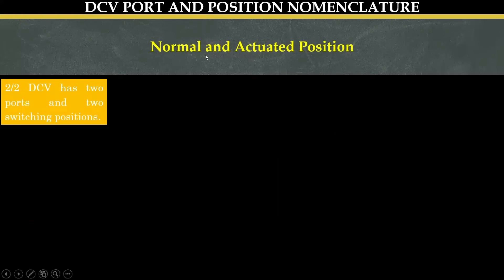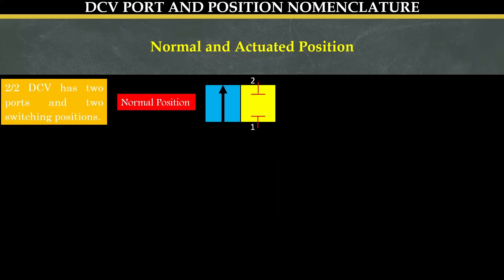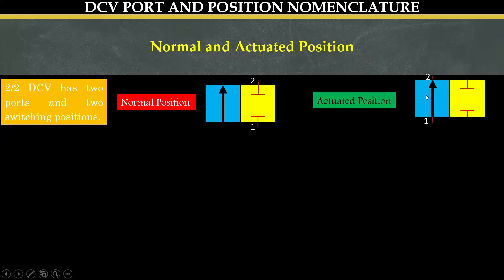Let's understand more about normal and actuated position. A two by two direction control valve has two ports and two switching positions. In its normal position it is represented with numbers one and two and lines extending from the ports on the right hand side of the valve. When these numbers and lines are drawn on the left hand side of the valve, the valve is represented in its actuated position.